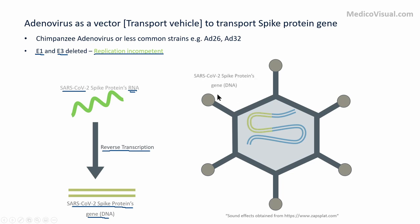Here is that spike protein gene inserted into the adenovirus. This is now the adenovirus vector-based DNA vaccine. It can enter into the cell and it can cause the immune response — it can train our immune system to fight against the spike protein. Let's see how it works.